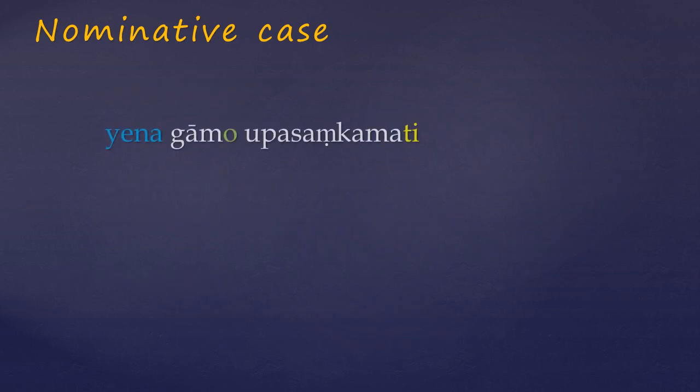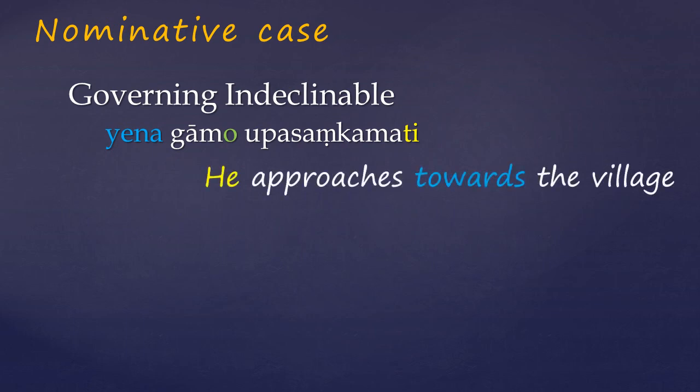Warder also highlights the adverb yena, which means where. And I think this is the only indeclinable which displays this characteristic. It's said to govern the nominative, which means its object here, the village, will always take the nominative case. And the subject of the verb here is implied by the third person ending. So it's not, as you first might think, the village which is doing the approaching.